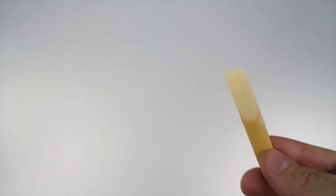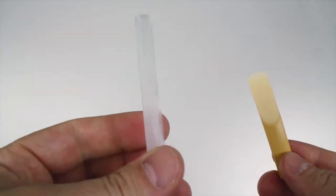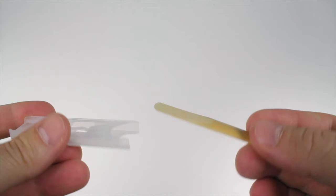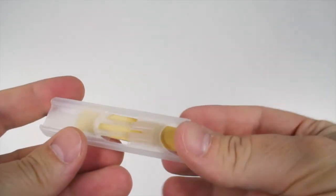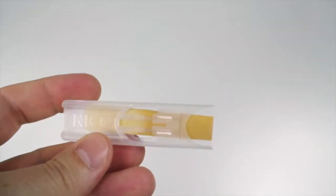When you're not playing your instrument, your reed is stored in a reed case. It might look something like this. When you put your reed away, you have to very carefully place the thin end into the case and slide it in, just far enough that it stays there.